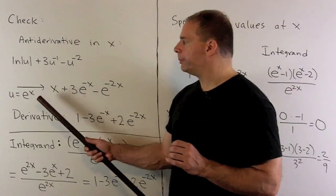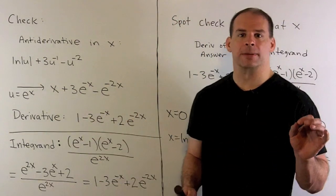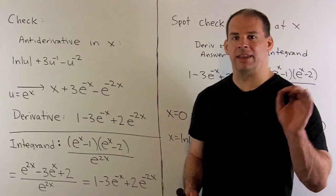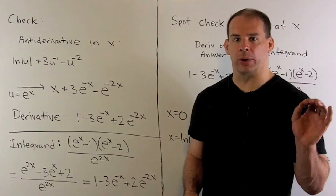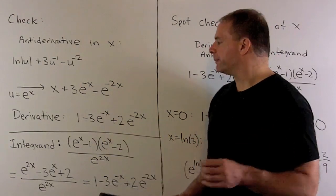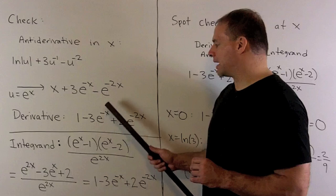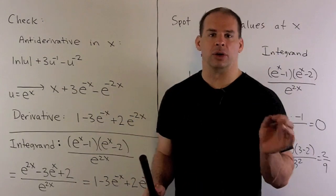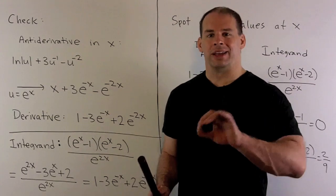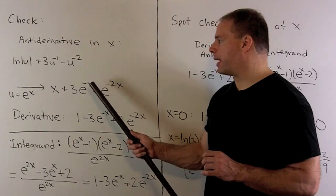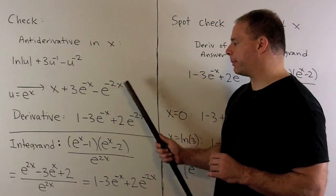Note, if I want natural log of the absolute value of e to the x, e to the x is always positive. So we really have natural log of e to the x, and then that's going to collapse down to an x. Take the derivative, I get 1 minus 3e to the minus x plus 2e to the minus 2x. So for the derivative of e to the u, we're going to do e to the u back, and then you take the derivative of u. So here we'll pick up a minus 1, here I pick up a minus 2.